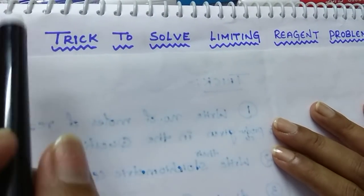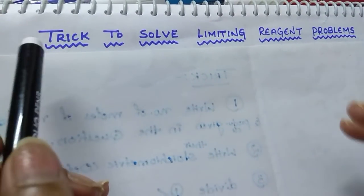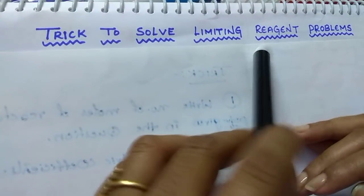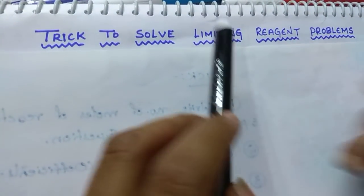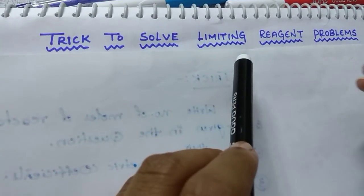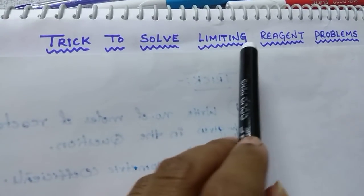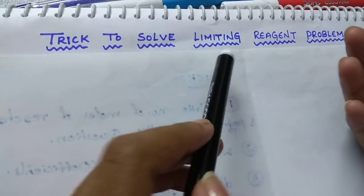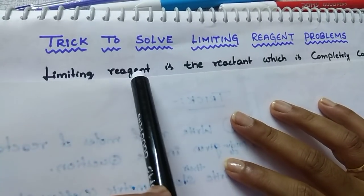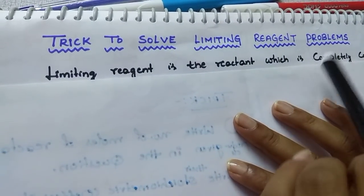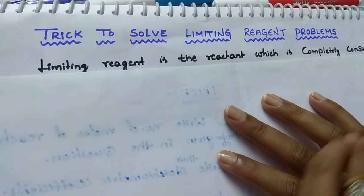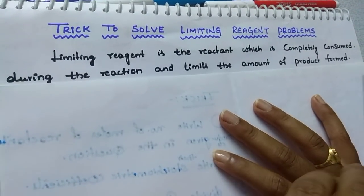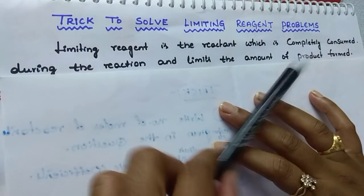Hi students, in today's session I am going to discuss an excellent trick to solve limiting reagent problems. If you know this limiting reagent, we can find the amount of product formed during the reaction. Limiting reagent is the reactant which is completely consumed during the reaction and it limits the amount of product formed during the reaction.